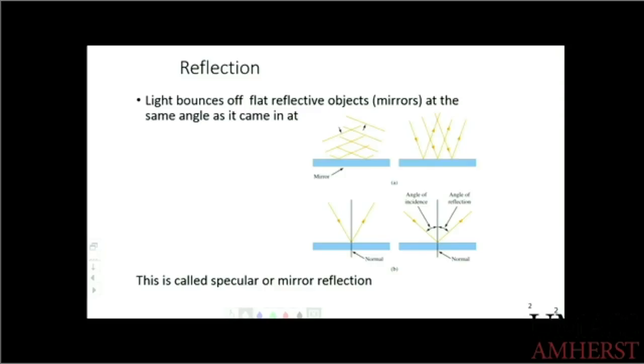You draw what's called the normal to the surface. That's a line perpendicular to the surface at the point where the ray hits. If I measure the angle relative to that normal, that's called the angle of incidence.